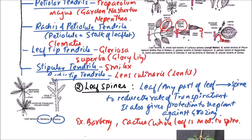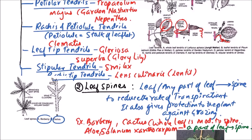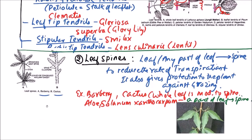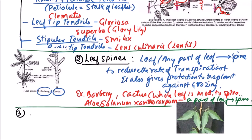While in some other examples like Aloe or Solanum xanthocarpum, only a part of the leaf becomes a spine. So this was the modification of leaf into spines.